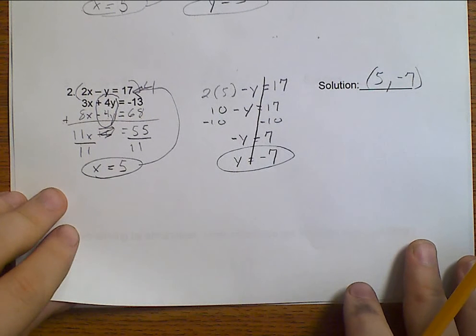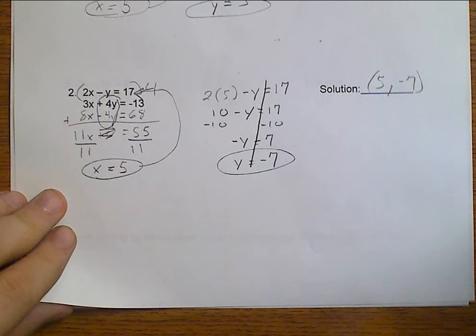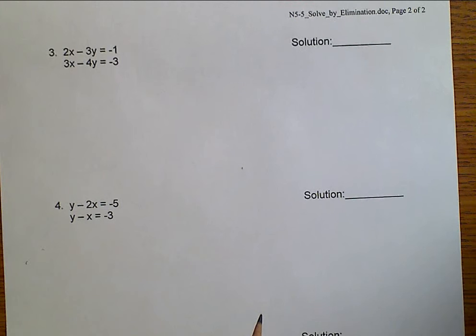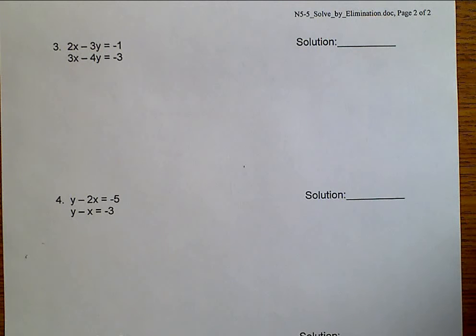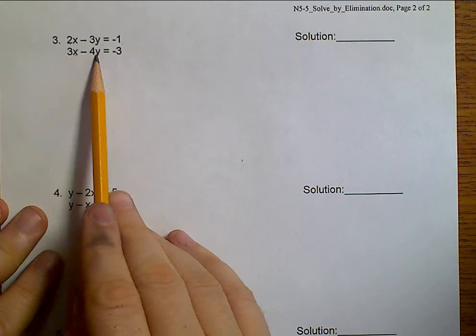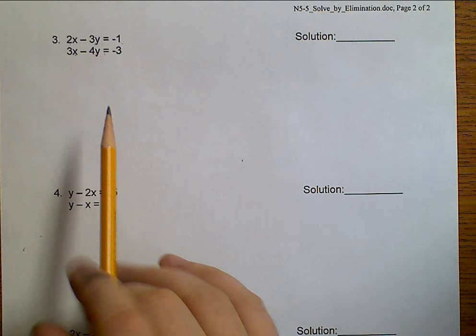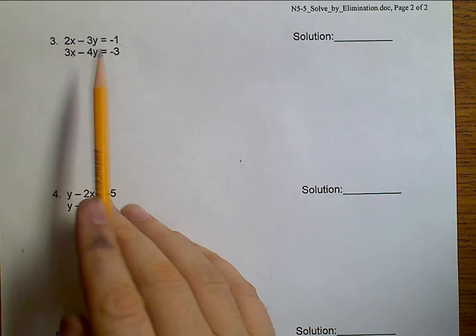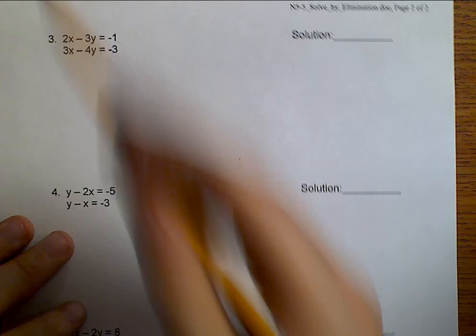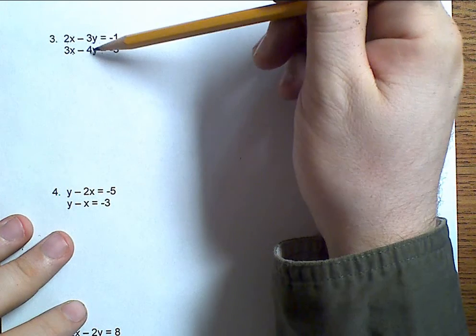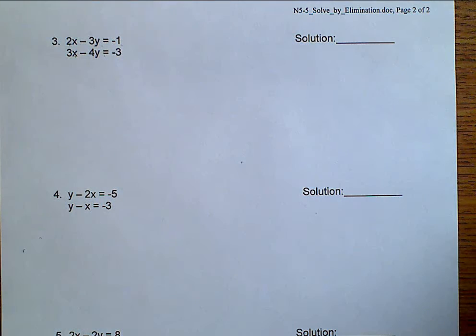Well, let's go ahead and take a look at example number 3. Now, first off, I need to see if they are in standard form. We've got X, Y equals a number. X, Y equals a number. Yes, they are in standard form. Next, I see if anything matches. Well, 2 and 3, they don't match. 3 and 4, they don't match. Now, nothing times 2 will give me 3. And nothing times 3 will give me 4. So, I'm going to need to multiply both of my equations.